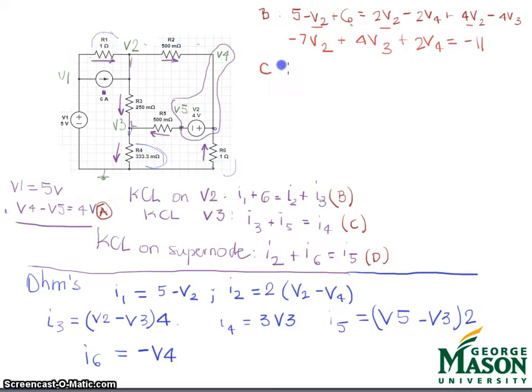C. Now I'm gonna do I3 plus I5. I3 is 4 V2 minus 4 V3 plus I5 which is 2 V5 minus 2 V3 equals I4 which is 3 V3. Now I merge all V2's 4 V2. Now all V3's minus 6 minus 3 minus 9 V3 plus 0 V4 plus 2 V5 equals 0.